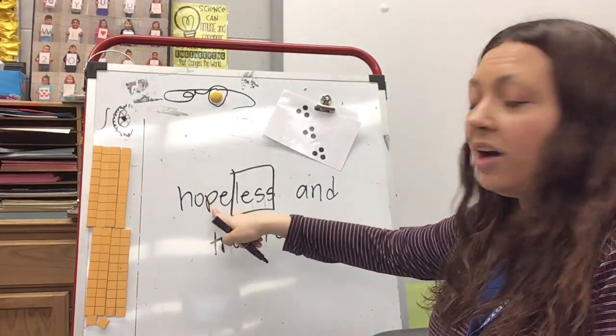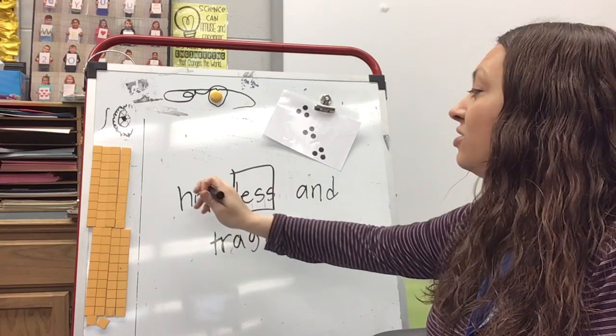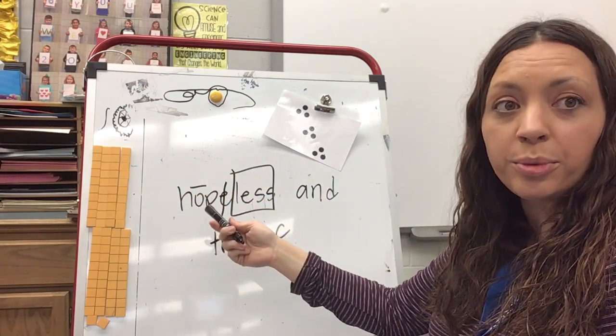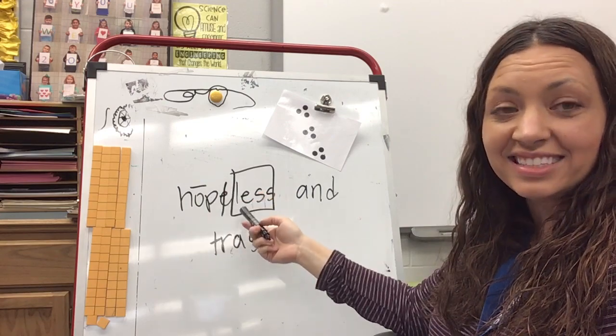Then over here I have an O, a consonant, and an E, so it's going to be a long O, sneaky E, so 'hope'—hopeless. Very good.